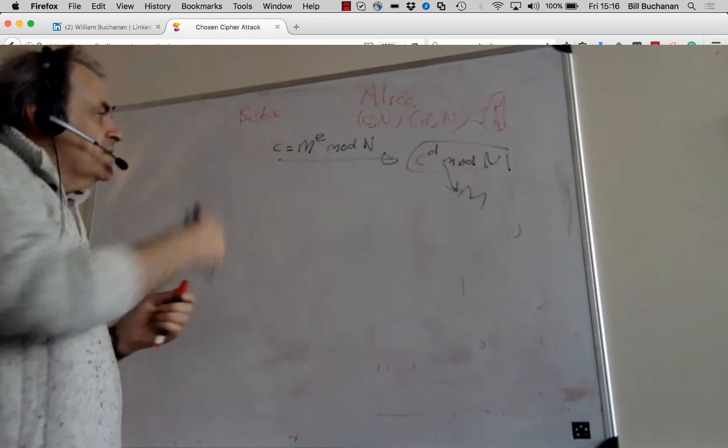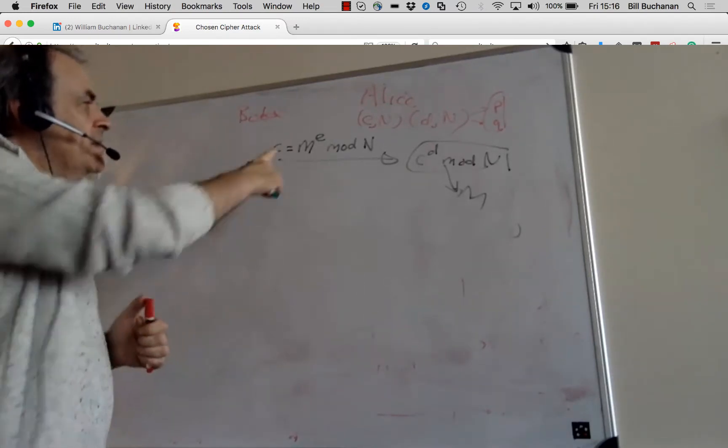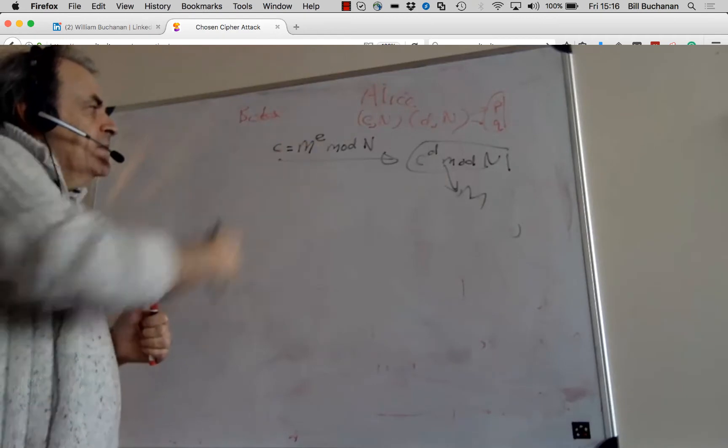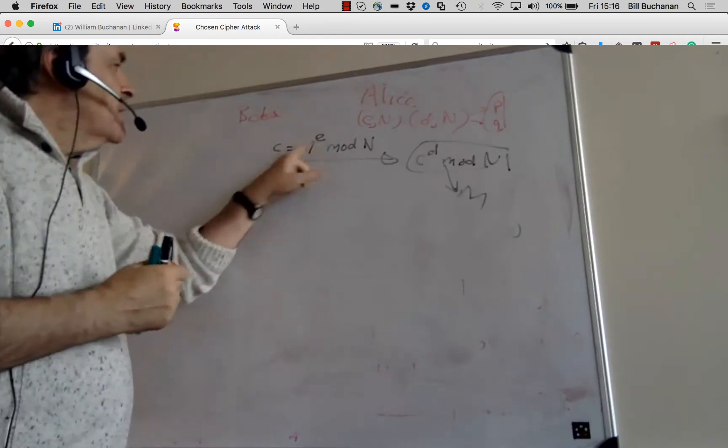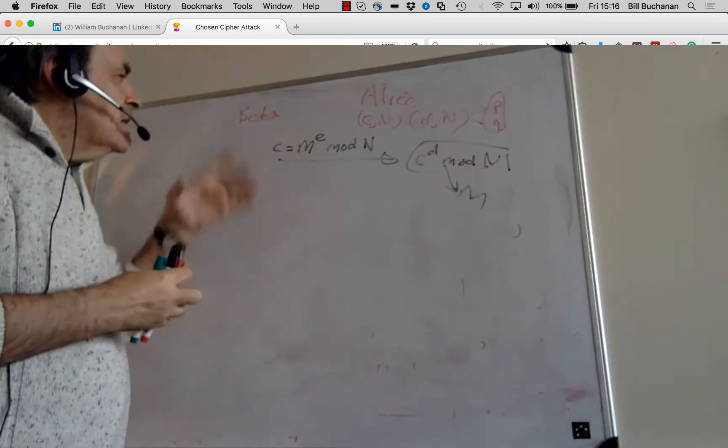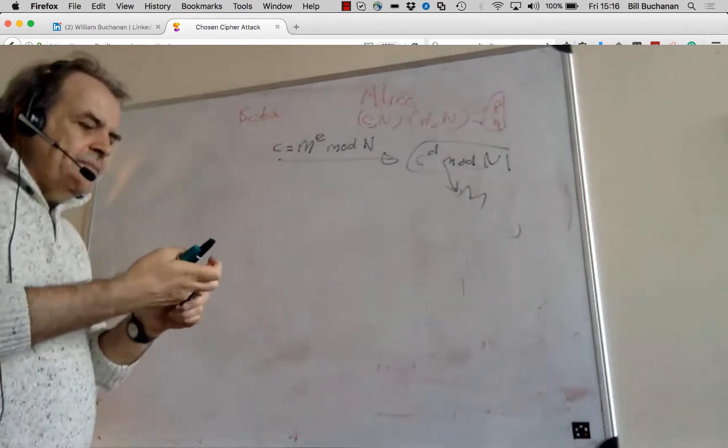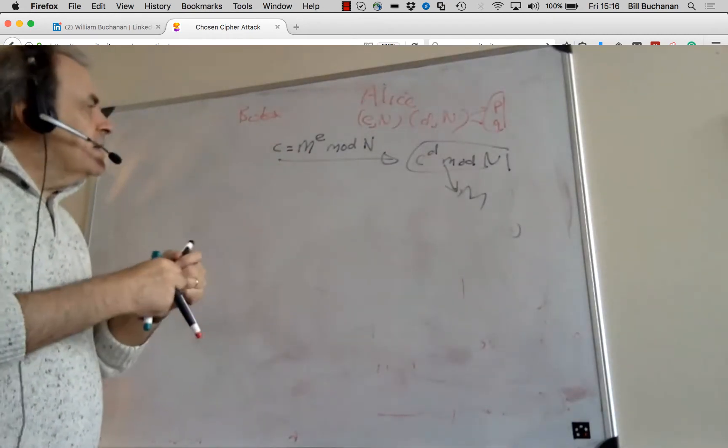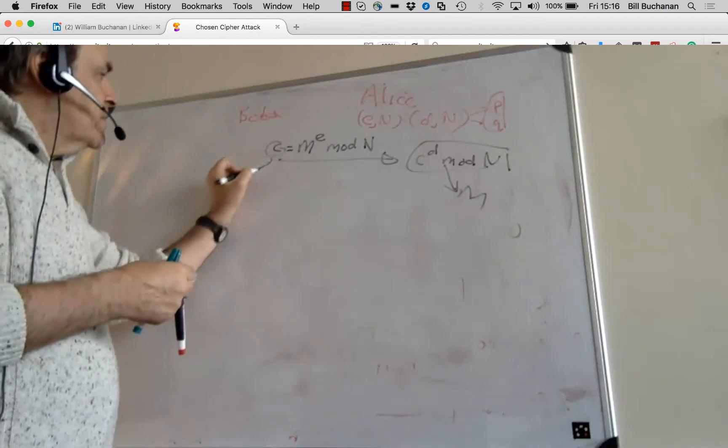He has a cipher here which has been encrypted with E, and he captures the cipher. Then what he does, he stores the cipher there.